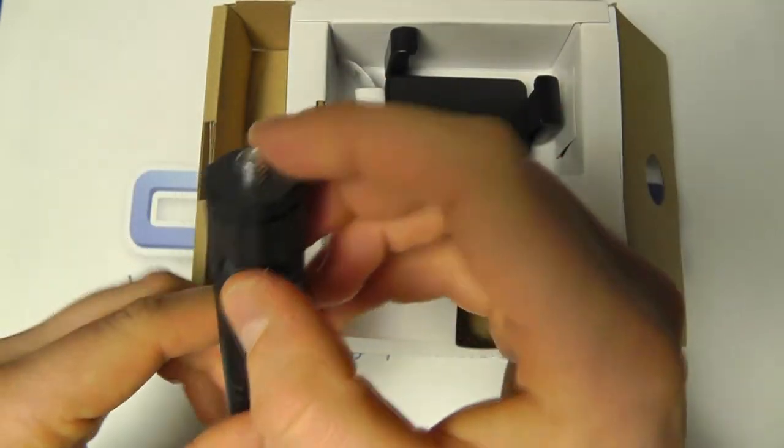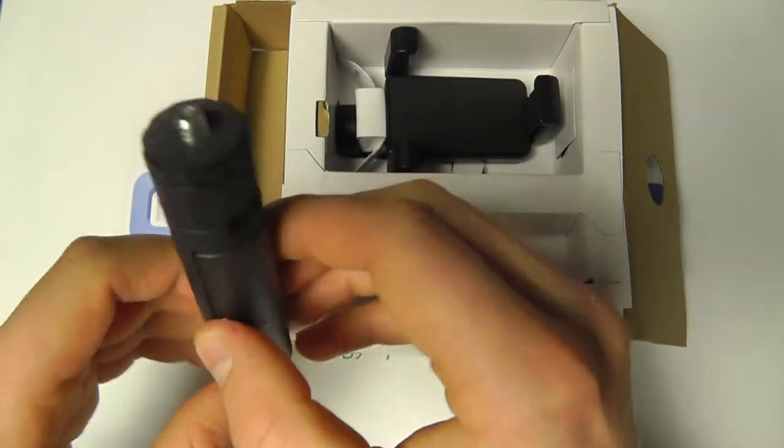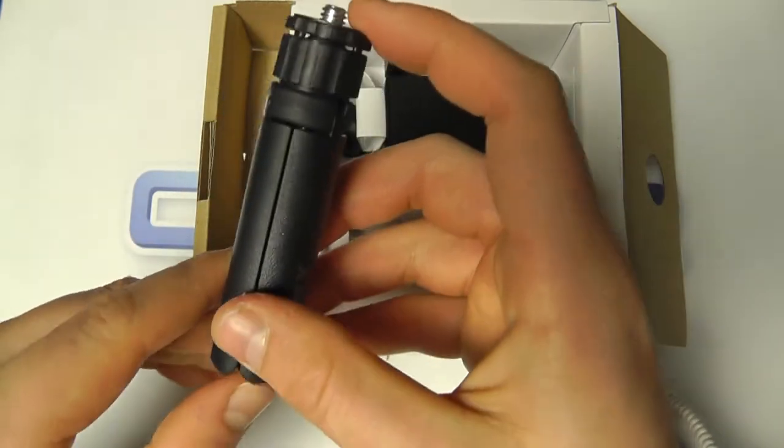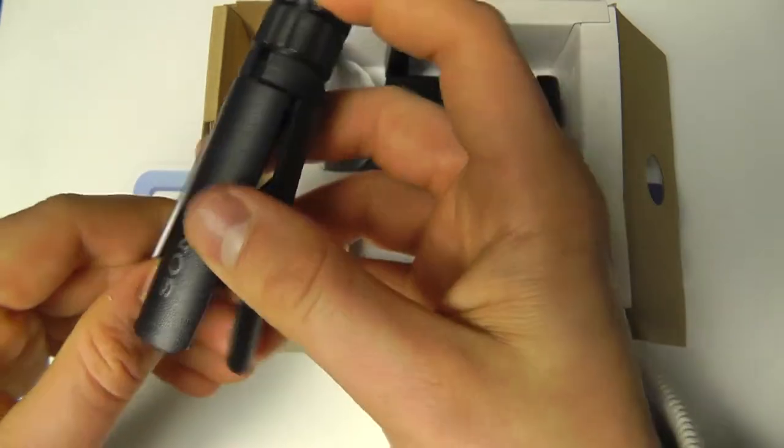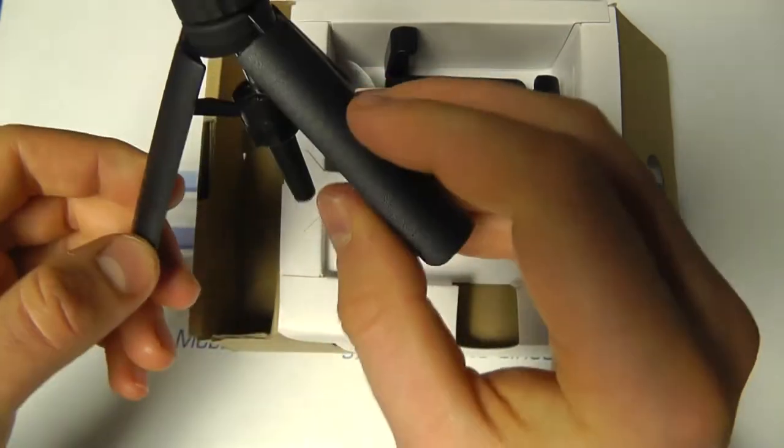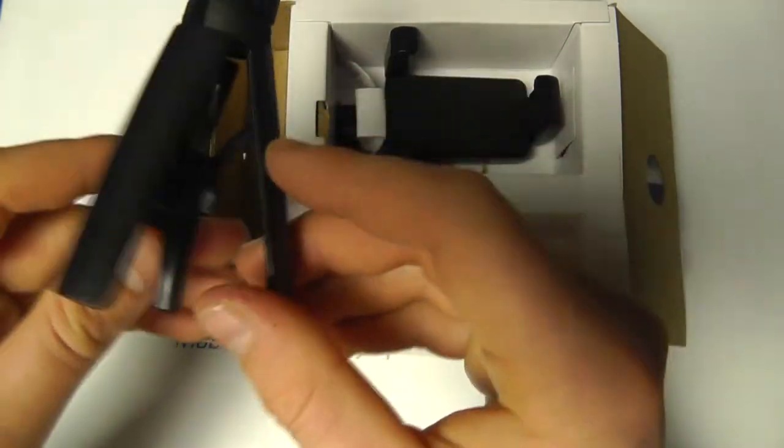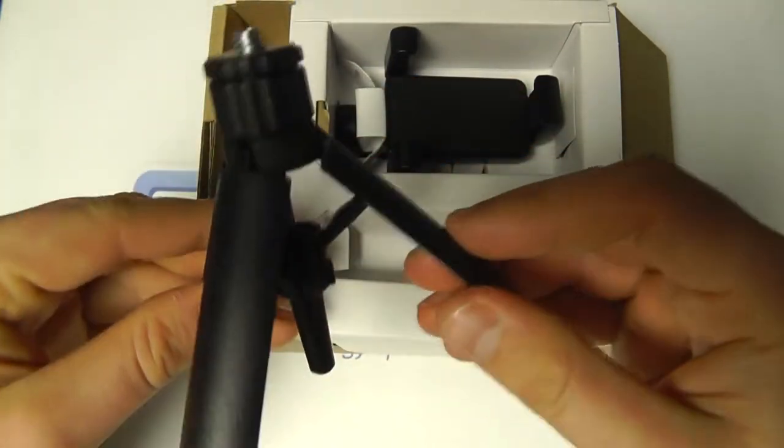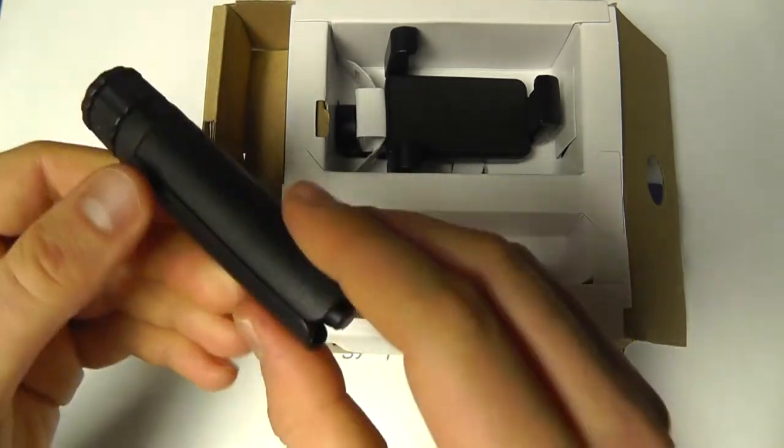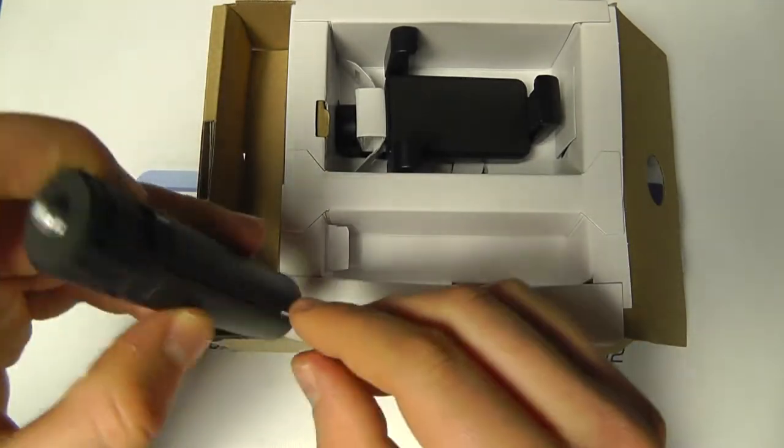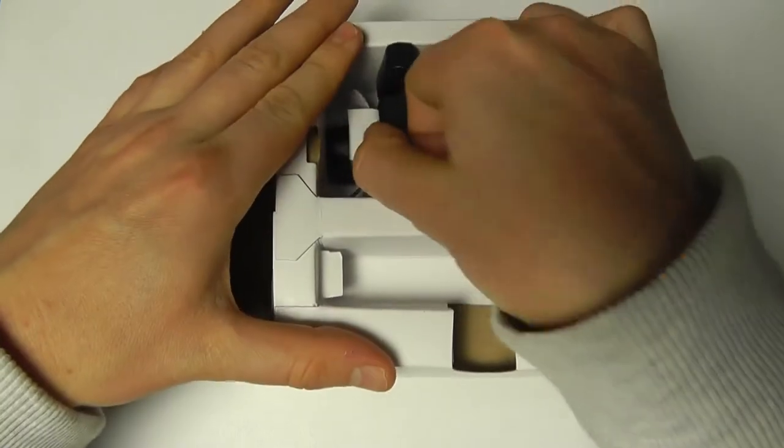You could also use other equipment on here if you wanted because it's using a universal standard tripod connection. What you do is pull the legs out—you've got three little legs here that all fold out like so, and then they clip into place for a nice secure fit.